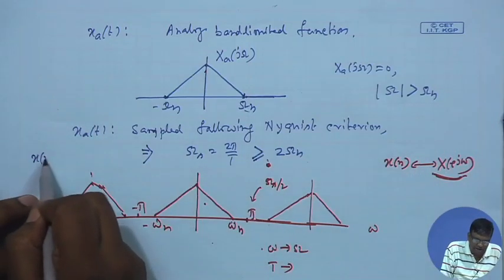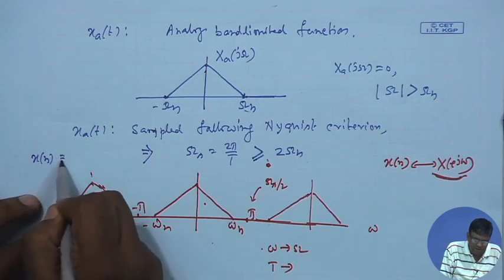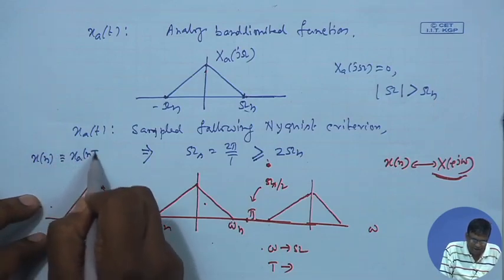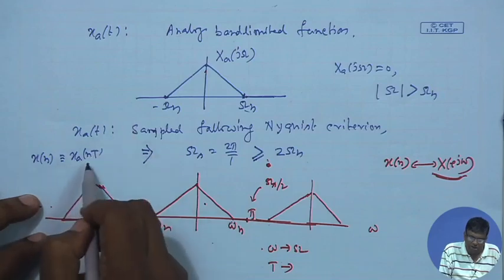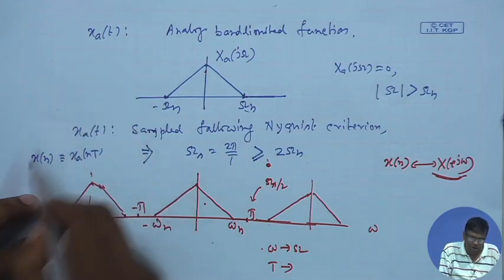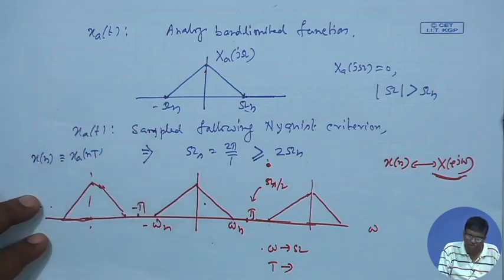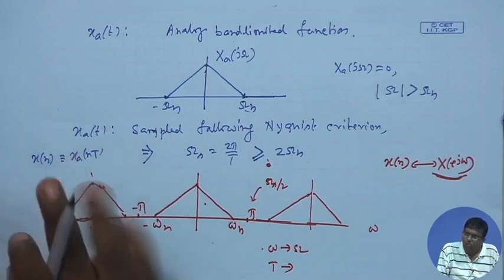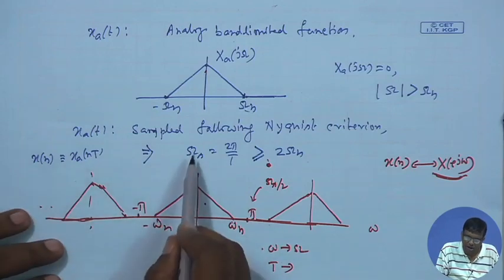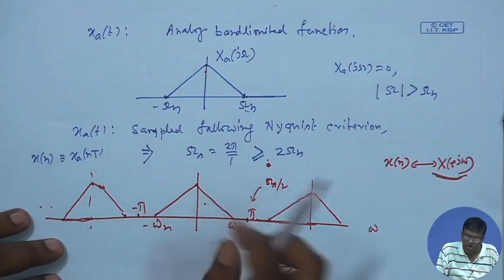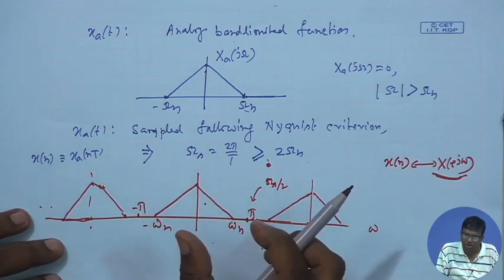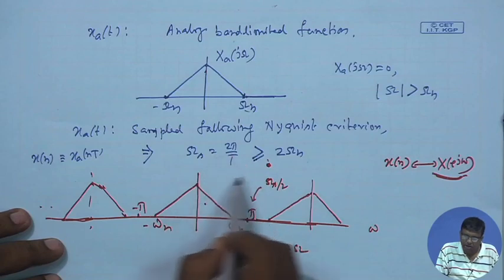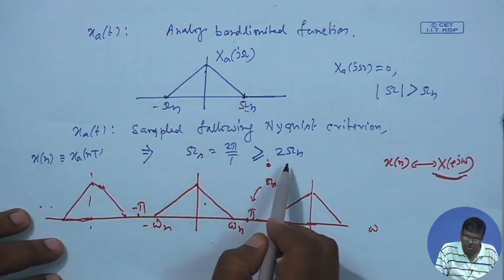The sequence x[n] is defined as x_a(nT), where nT is the time point and x_a is the analog function — that is what we call a sample of the sequence. We sample following the Nyquist condition, meaning the analog sampling rate omega_s = 2π/T is greater than or equal to twice the band-limiting frequency.